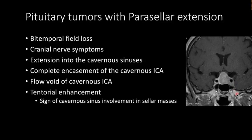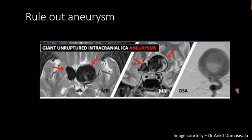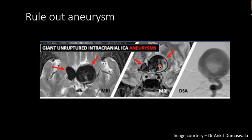Another sign is tentorial enhancement of the pituitary, visible on axial images, which indicates cavernous sinus involvement. An important differential is a suprasellar or supraclinoid ICA aneurysm, which can be mistaken for an adenoma on MRI. On non-contrast CT, the flow void may appear slightly hyperdense and be missed. Always rule out an aneurysm — missing a suprasellar aneurysm and reporting it as an adenoma would be a diagnostic disaster.